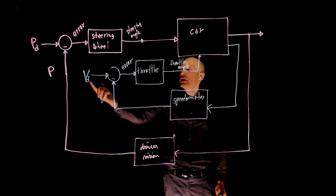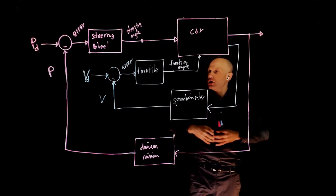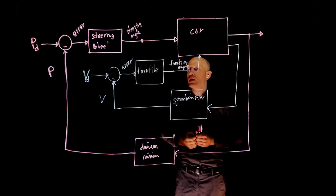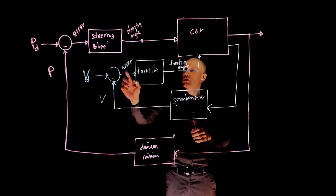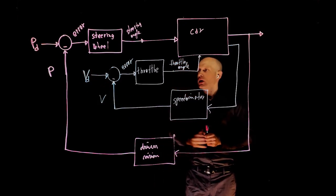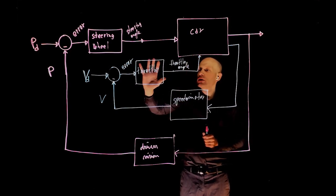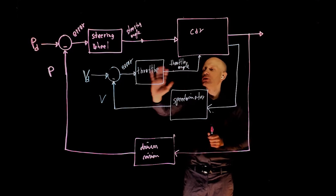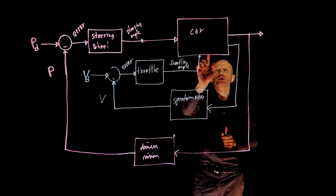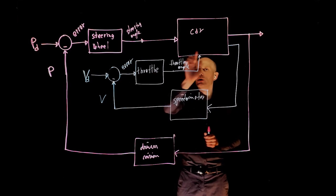Now let's think about this error-based control again. We don't drive based on the desired speed. We drive based on how far we are from the desired speed — based on the difference between desired and current speed. We press more or less on the throttle depending on that error, not on the absolute value of either of these two. We convert that into a throttle angle and give it to the car. This is the actuator, this is what makes the car respond to a certain command. This is the output of the actuator given to the car. The car responds by changing the speed, we measure the speed, and close the loop.